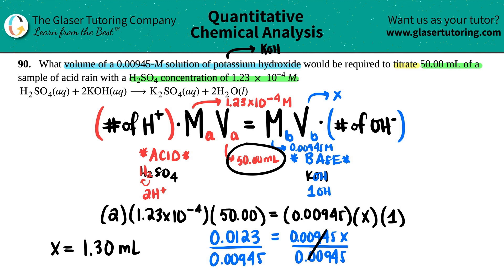So here we go, guys. How much, what's the volume? 1.3 mils. I only needed 1.3 mils of my potassium hydroxide that I needed to add to my acid rain to basically titrate this and neutralize it.